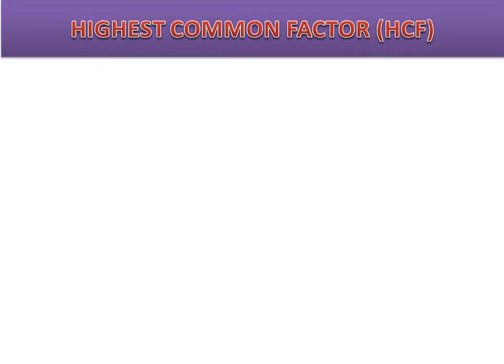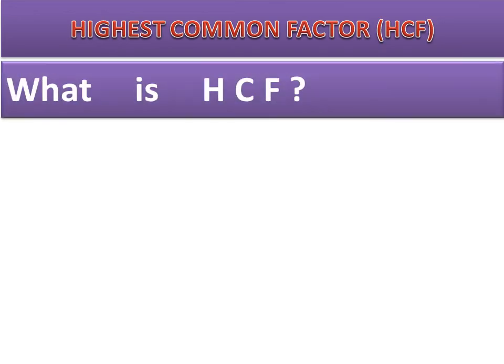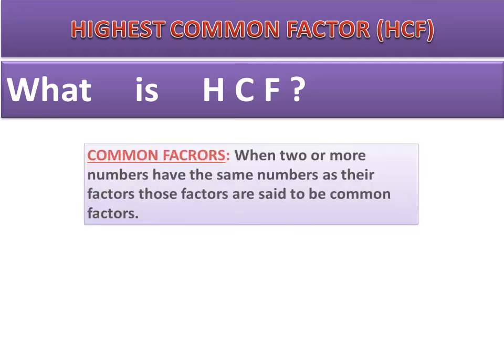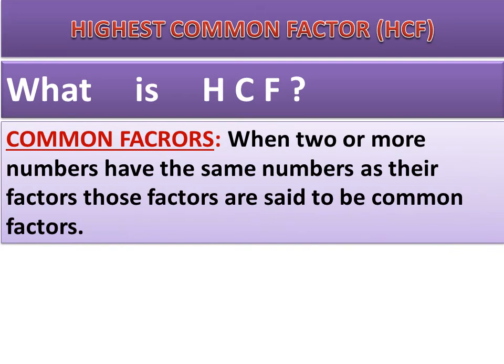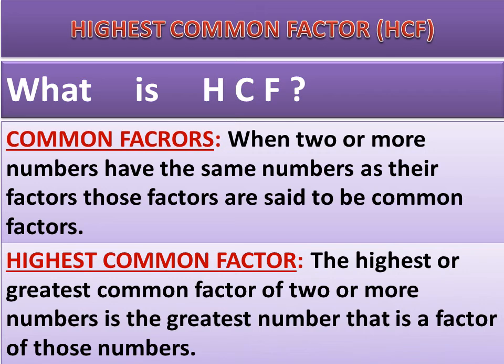Hope you understand how to find the factors. Let us now learn about the Highest Common Factor, or HCF. When 2 or more numbers have the same numbers as their factors, those factors are said to be common factors. The highest or greatest common factor of 2 or more numbers is the greatest number that is a factor of those numbers. Let us solve some examples.